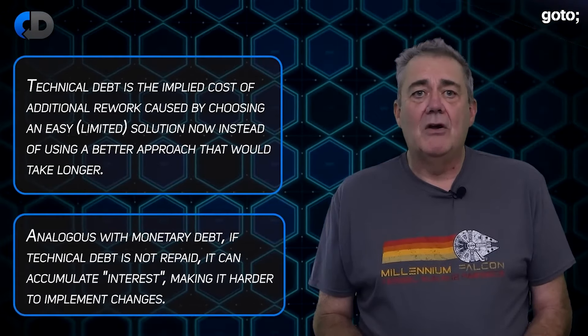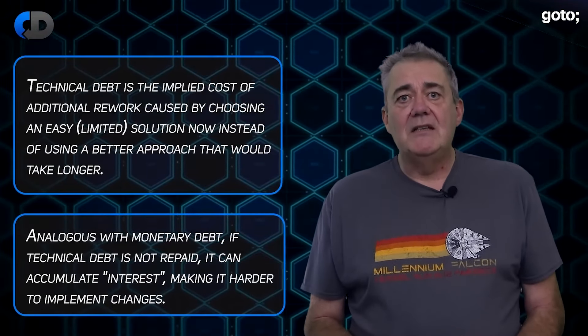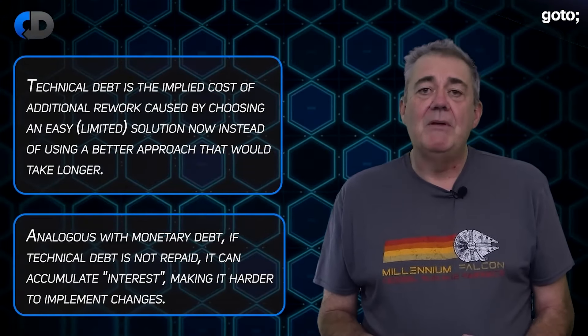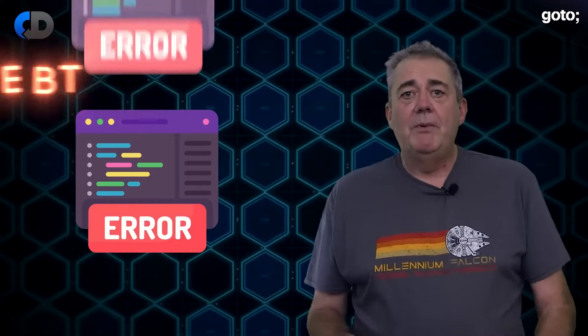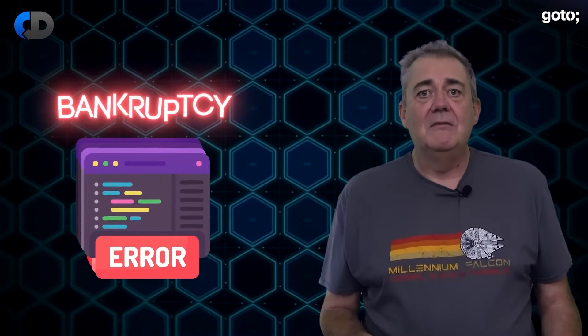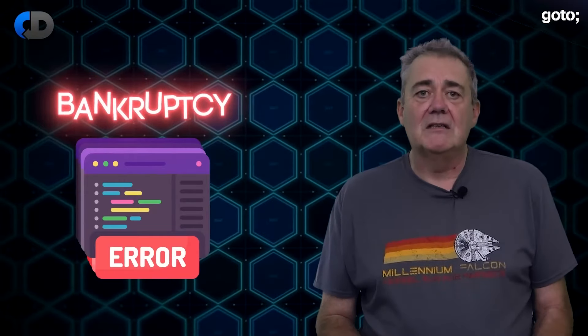Analogous with monetary debt, if technical debt is not repaid it can accumulate interest, making it harder to implement changes over time. Here is an analogy likening ideas in finance to those in software. If we write bad code that requires us to revisit it later because of its low quality or the inapplicability of the solution, then that's a debt that we will either repay or that will grow over time until we're bankrupt — unable to repay our debt and so keep going. The bankruptcy equivalency in software terms takes the form of a codebase that's so difficult to change that change grinds to a halt, or slows to the extent that you're spending more time and money on fixing things than you are on producing new ones.